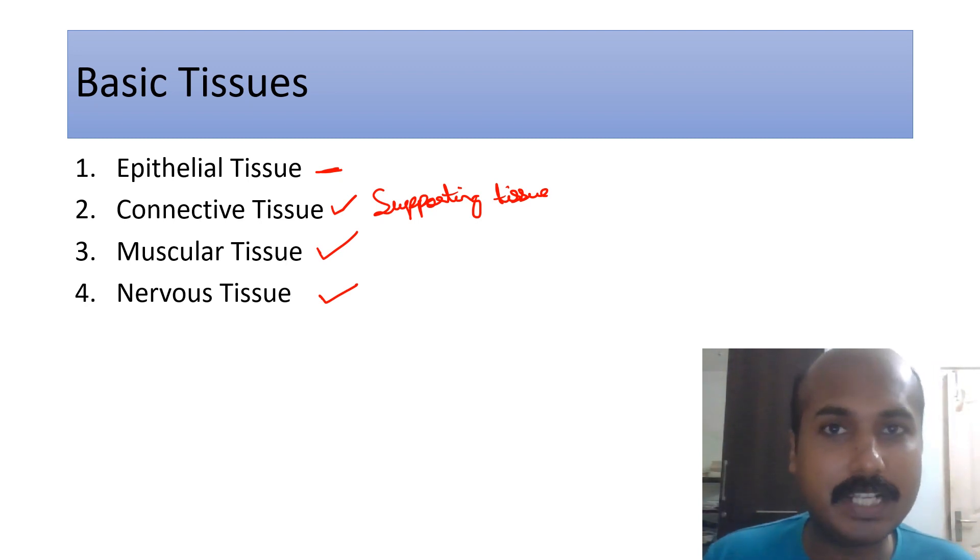Some part will be muscle tissue, some part will be nervous tissue. Some will have a high proportion of nervous tissue, some will have an absence of muscular tissue. So there are basically different combinations and proportions of these tissues in any slide you take.